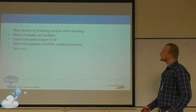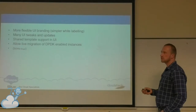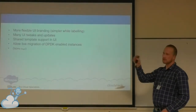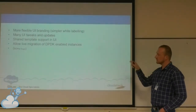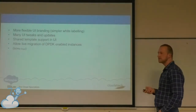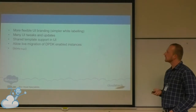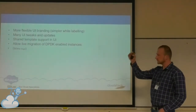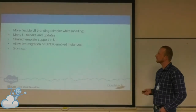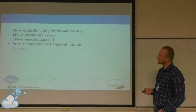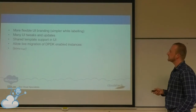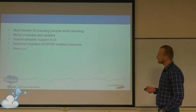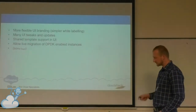We also have more flexible UI branding. There is a special config.js file — you can change the browser page/tab title so it doesn't say Apache CloudStack; you can call it whatever you like. You can change the help URL in the About box, change keyword names, hide some columns in metric views like storage metrics or instance metrics. Many, many different UI tweaks and updates. We also have shared template support in the UI — I'll show this on the next slide.